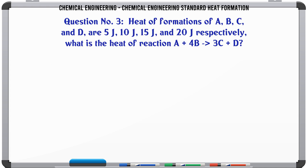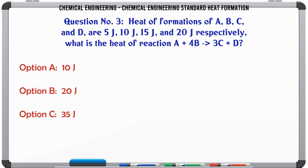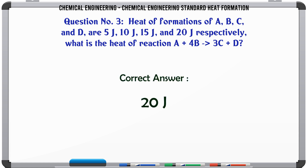Heats of formation of A, B, C and D are 5J, 10J, 15J and 20J respectively. What is the heat of reaction A + 4B → 3C + D? A) -10J. B) -20J. C) 35J. D) 45J. The correct answer is -20J.